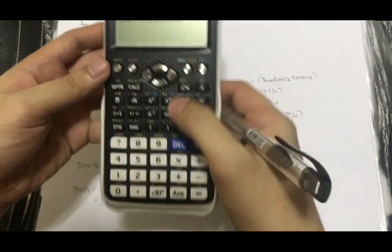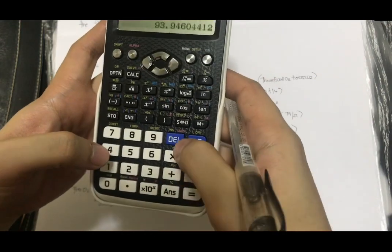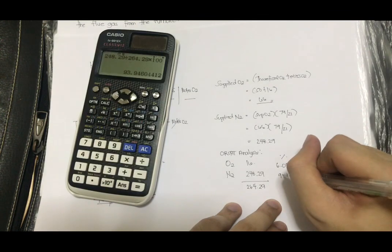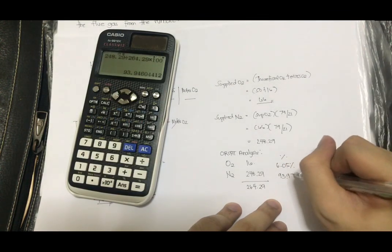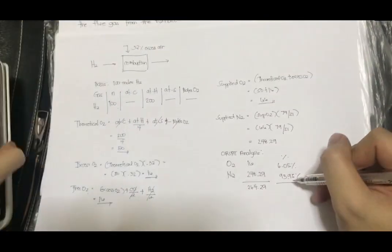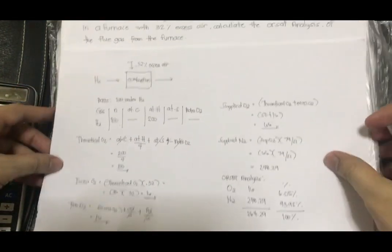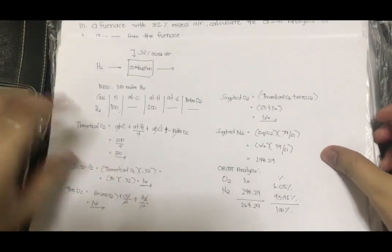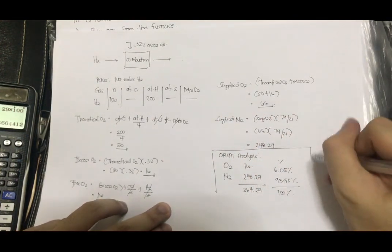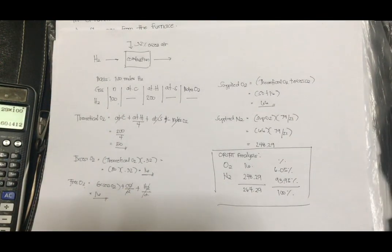Next is the N2, which is 93.95%. This should always equal 100. So now, this is our Orsat analysis.